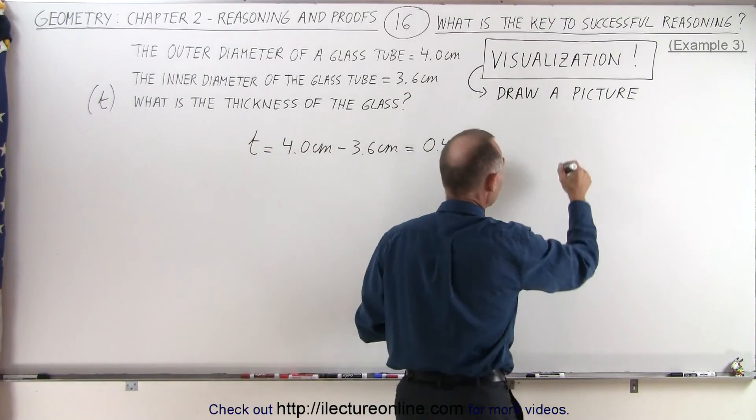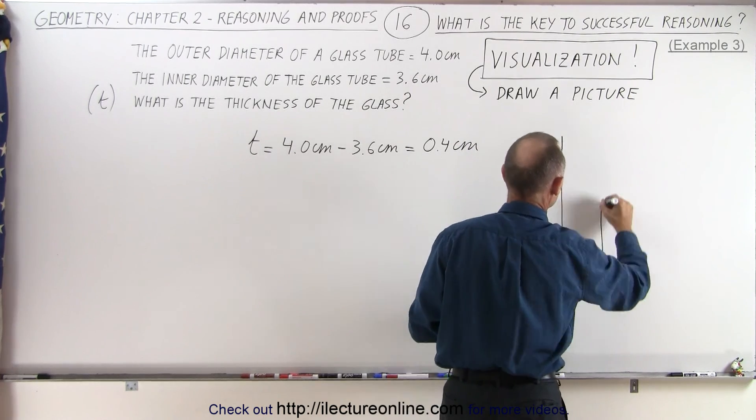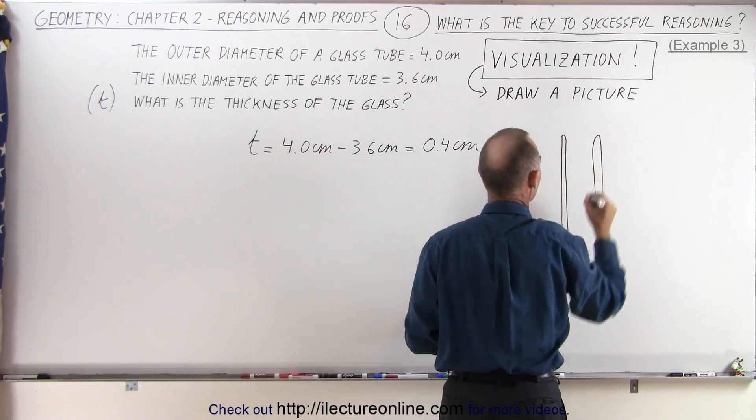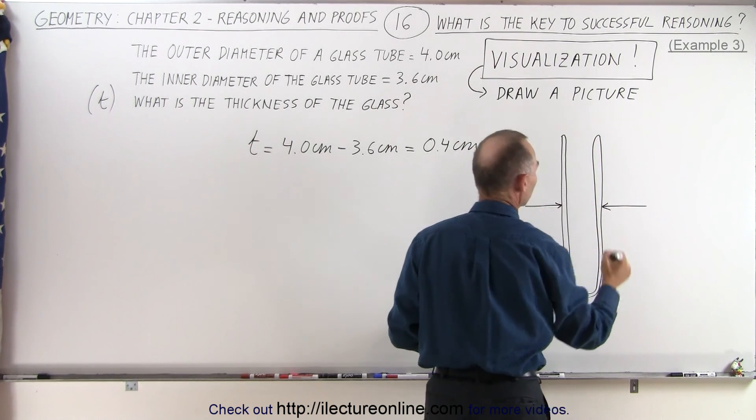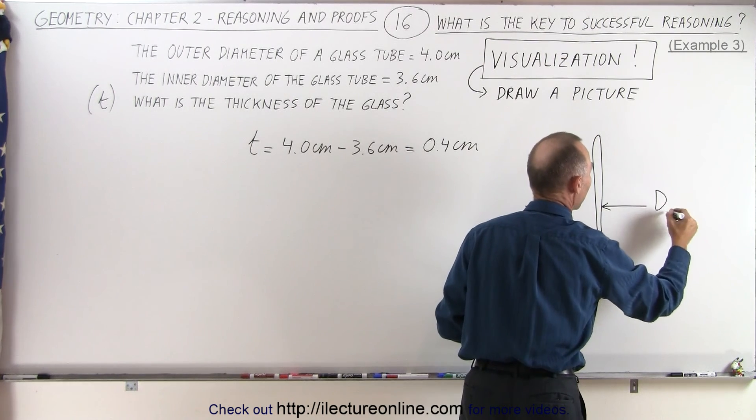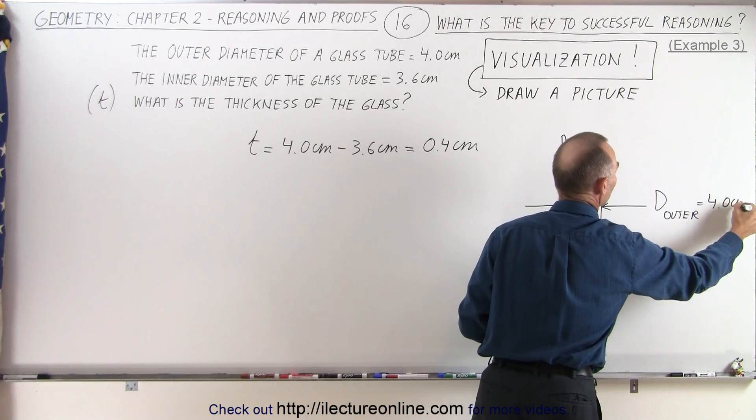So, let's say we have a test tube made out of glass, and that would probably look something like this. Like that. And, so here we have the outer diameter. So, they measure the outer diameter. So, we say D outer is equal to 4.0 centimeters.